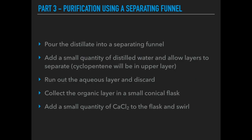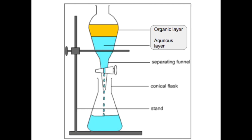Add the anhydrous calcium chloride to the flask and swirl — any small traces of water will be absorbed, leaving the organic product behind. Then filter and collect the product in a small container. If you want to further purify the product, carry out a redistillation, controlling the temperature to exactly 44°C so you know you are collecting only the cyclopentene. In the diagram, the organic layer is on top and the aqueous layer with dissolved impurities is on the bottom — run that out, collect the organic layer separately, add the drying agent, then filter.